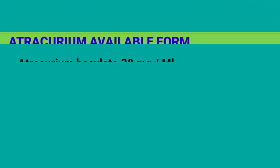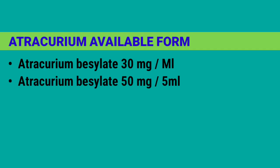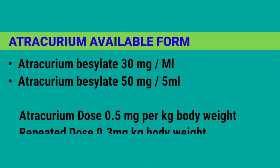Atracurium Besylate available forms: 30mg/ml and 50mg/5ml. Atracurium dose: 0.5mg per kg body weight; repeated dose: 0.3mg per kg body weight.